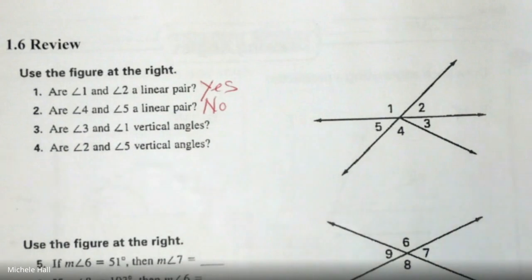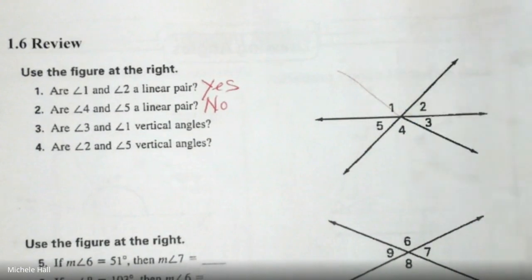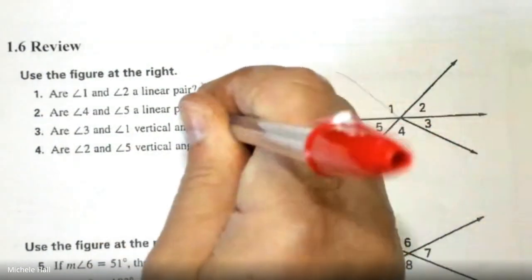Are Angle 3 and Angle 1 a vertical angle? No, remember that the lines have to actually be an X. And the ones that are across from each other, it's always a vertical. So that would be a no.